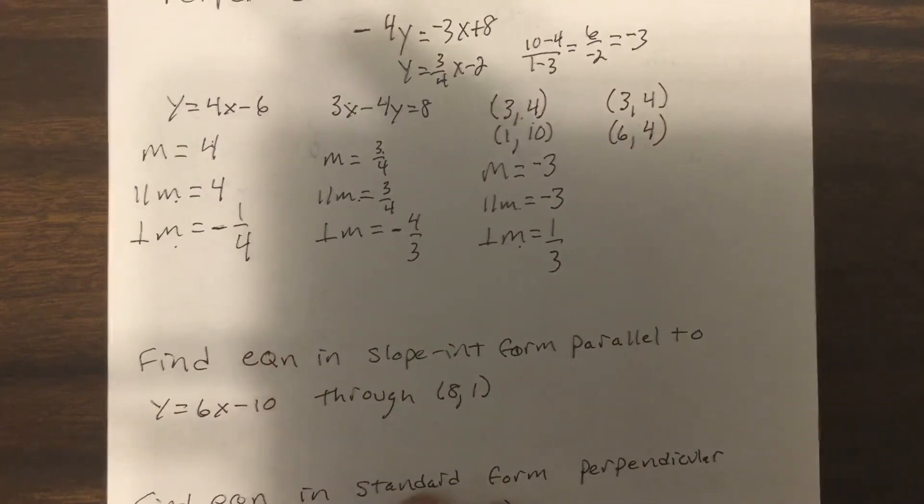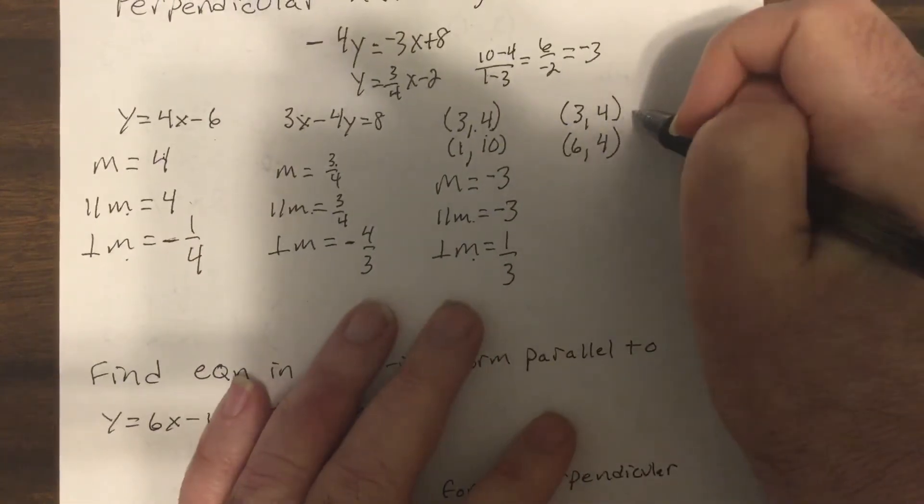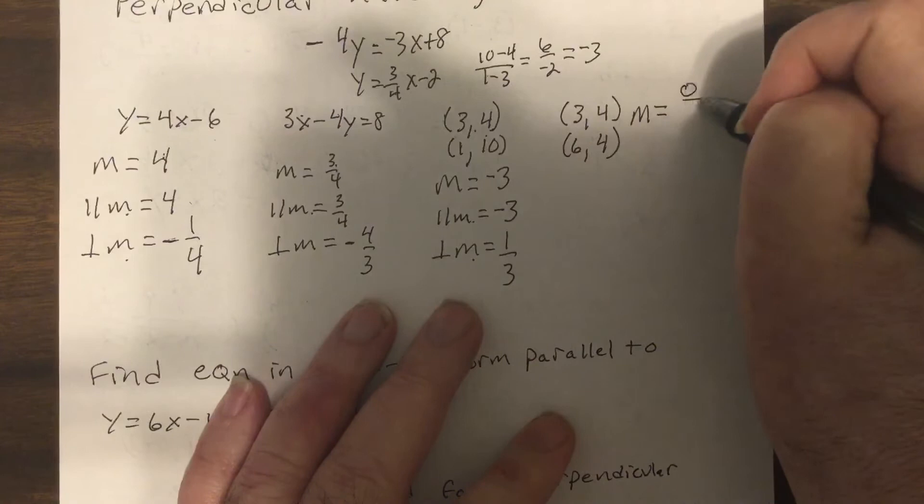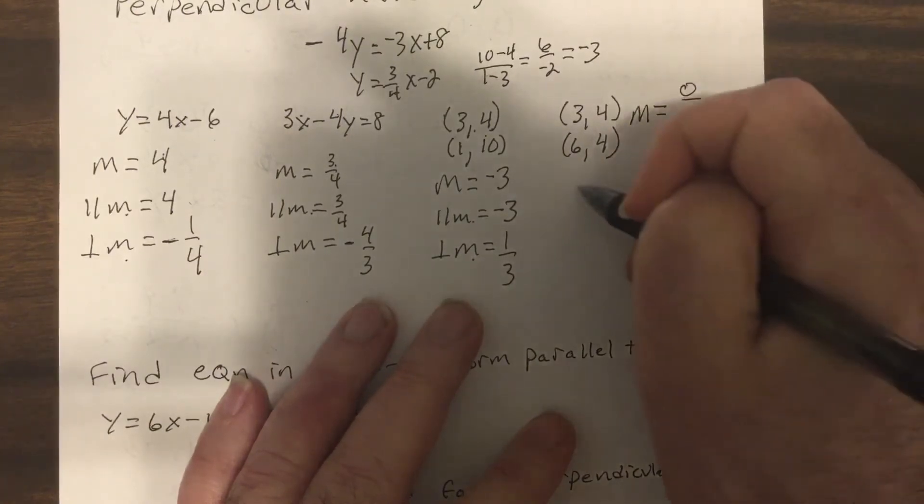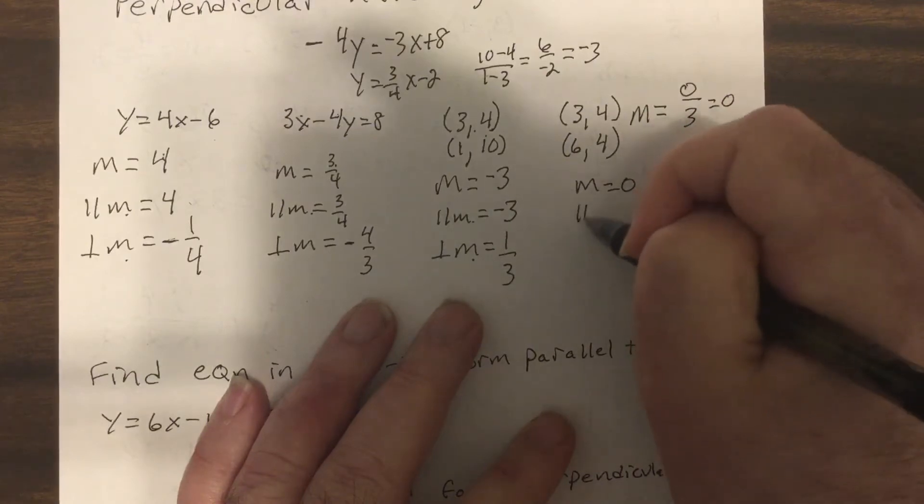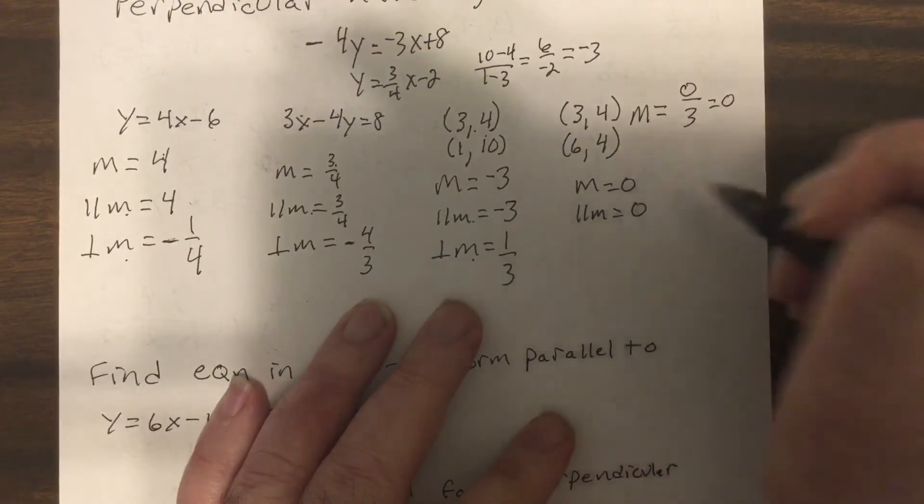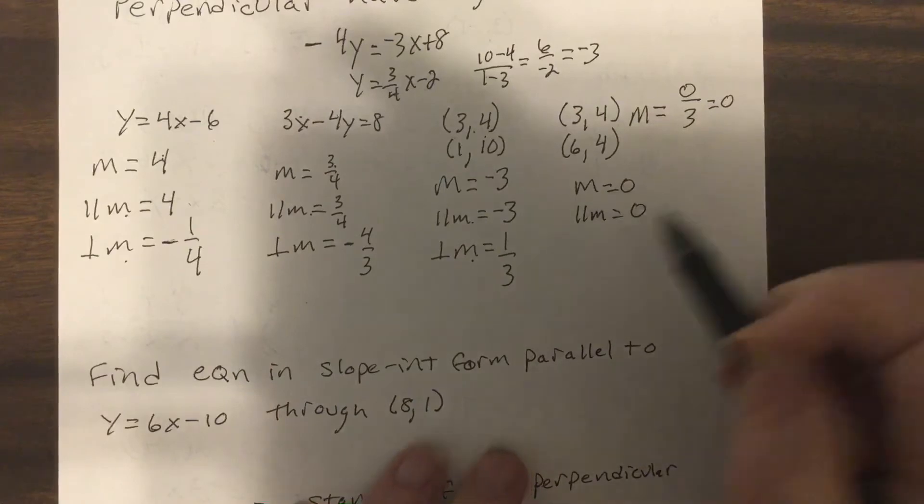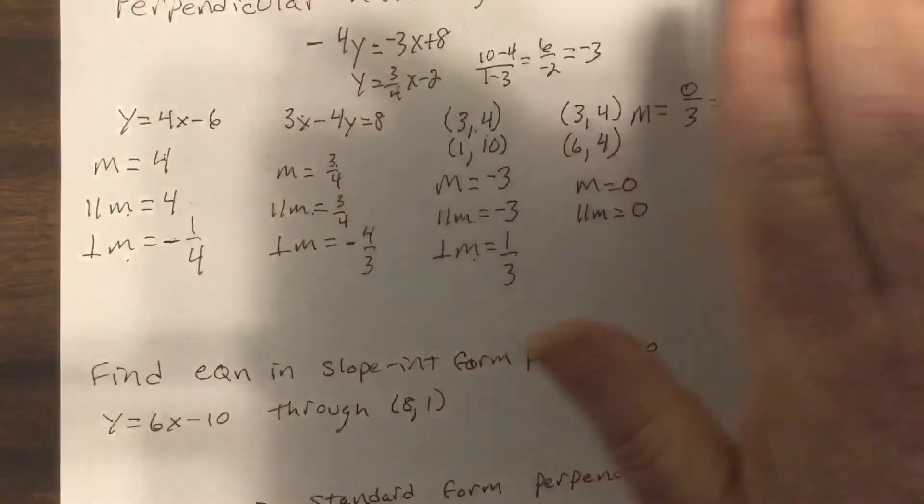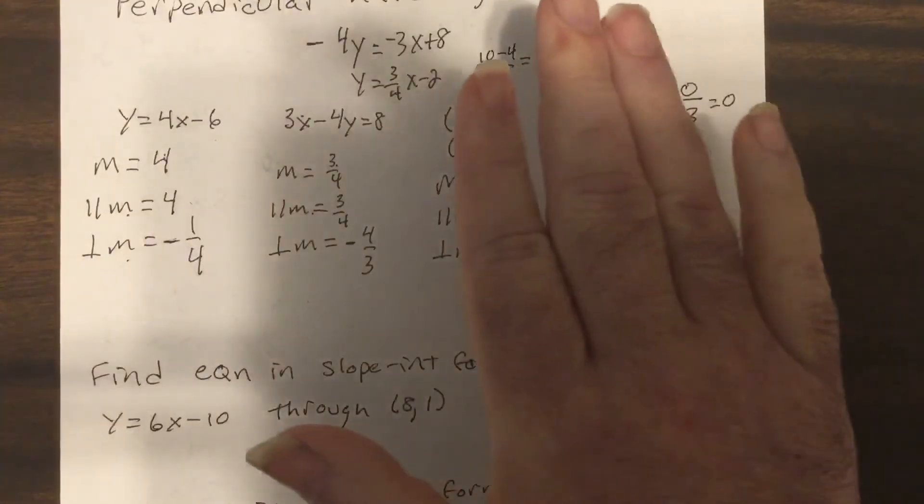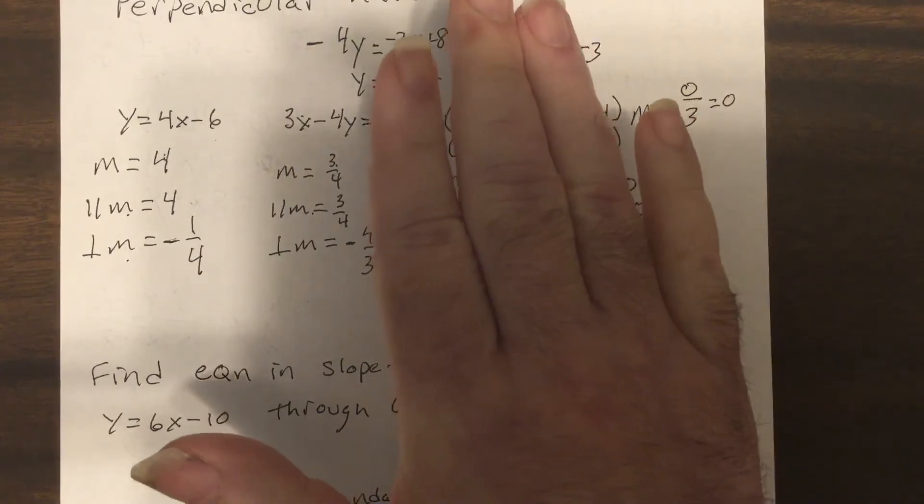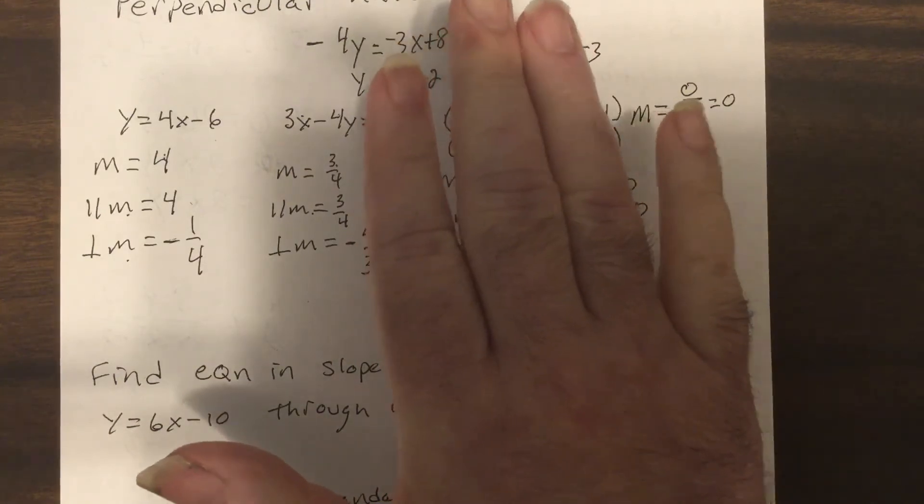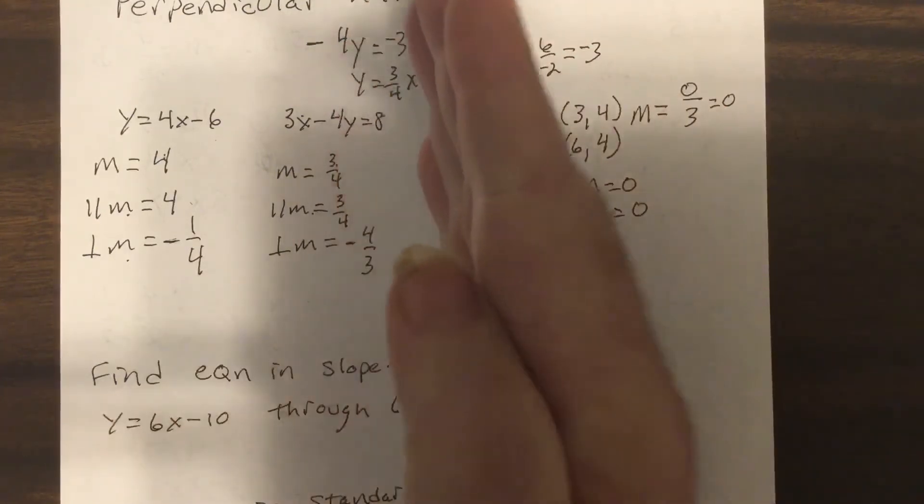The parallel slope is negative 3, the perpendicular is the negative reciprocal, so flip it. Now this one, the slope is zero: 4 minus 4 over 3, so it'd be zero. The parallel slope is also zero, making it a horizontal line going straight across.